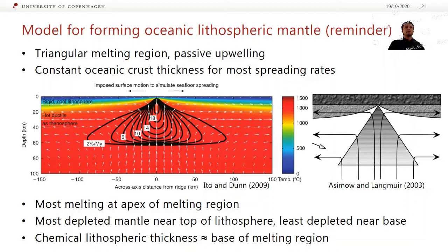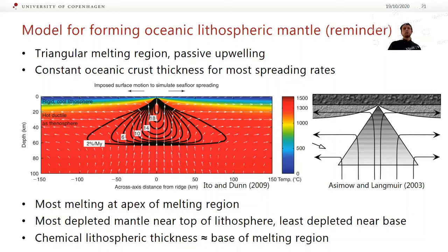I'll talk a bit about how oceanic lithosphere forms. This is a basic spreading model for oceanic lithosphere formation. In this model, two oceanic plates are slowly separating, causing passive upwelling — hot asthenosphere decompresses to very shallow depths — and melting basically occurs in a triangular region. The interesting thing with this model is that it predicts pretty much constant oceanic crustal thickness for almost any spreading rate, because essentially the faster you're pulling it apart, there's not as much time for more magma to get up there before it's being pulled away — so it kind of cancels out.